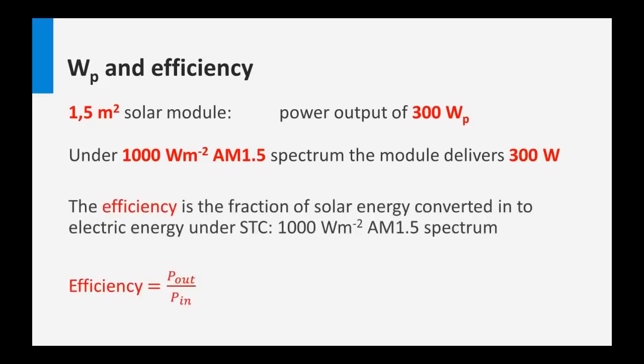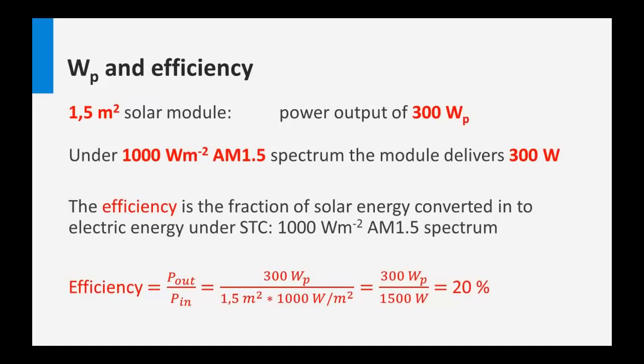The efficiency is the fraction of solar energy which is converted into electrical energy under standard test conditions. The efficiency is the power coming out of a solar cell divided by the total power of light which we put into the solar cell. For this solar module of 1.5 square meters, the output under standard test conditions is 300 watts — that's the 300 watt peak. The power we put in is 1.5 square meters times 1000 watts per square meter, giving 1500 watts. So 300 watts over 1500 watts means the efficiency of the module is 20%.